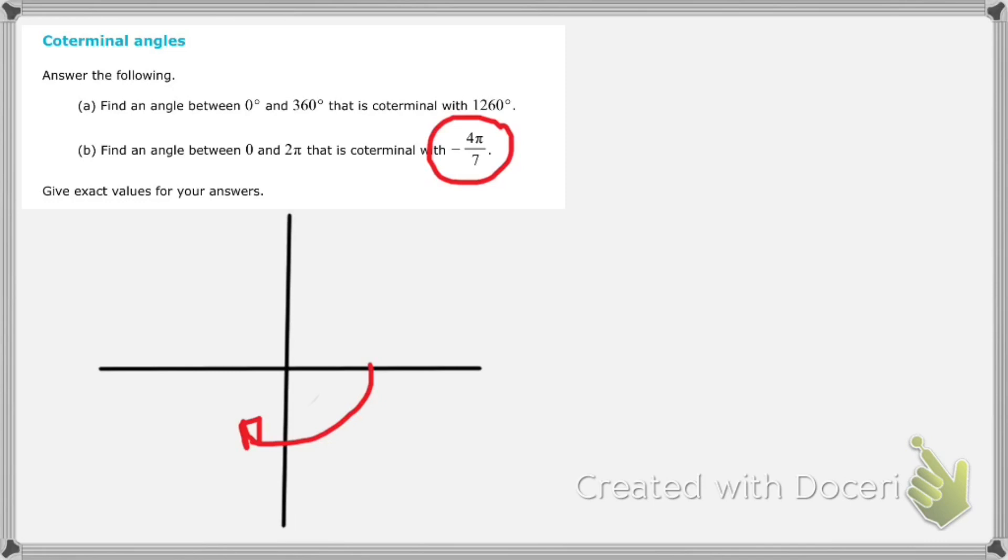If I take the negative 4π over 7, I'm going to take a negative 4, and then times π over 7. Just to make some sense of this, this is not anything that you need to do for this problem, but I just want to make sense of what's happening with this here.